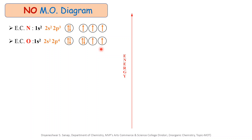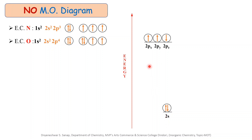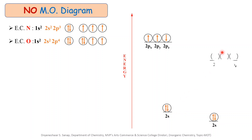Out of these two elements, nitrogen is less electronegative with respect to oxygen, and that is why we write nitrogen on the left hand side. The 2s shell is at lower energy and the 2p shell is at higher energy, with 2 electrons in 2s and 3 electrons in 2p. Similarly, we write the atomic orbital for oxygen on the right hand side. The 2s atomic orbital of oxygen is lower in energy than the 2s atomic orbital of nitrogen. Similarly, the 2p orbital of oxygen is lower in energy than the 2p orbital of nitrogen.